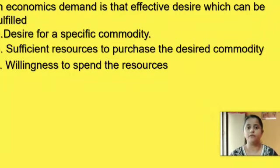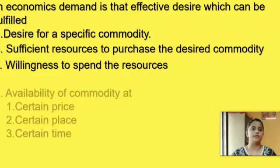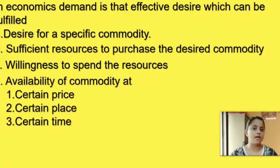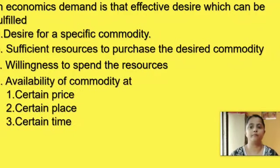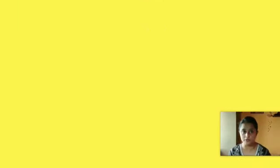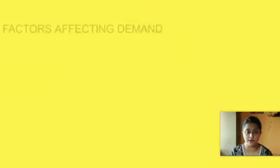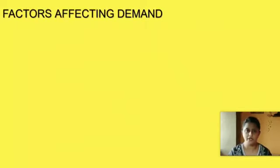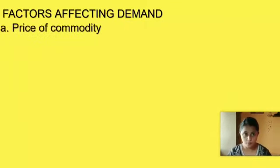In that case, this cannot be demand for a BMW; it is only desire. The fourth prerequisite is availability of the commodity at a certain price, certain place, and certain time. Now, do you know what the factors are which affect demand? The first is price of the commodity — this is a very important factor.